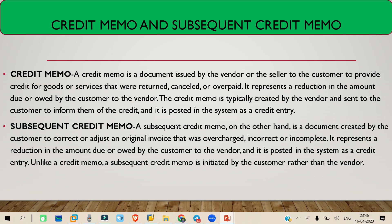Now, what is a subsequent credit memo? Let's say you raised a PO where the material price was 10 rupees per piece and the total value was 100 rupees. But your vendor sent you an invoice for 120 rupees — a higher amount than your PO value. Now you want to reduce the price from 120 to 100. In this case, a subsequent credit memo will be generated to reduce the price.